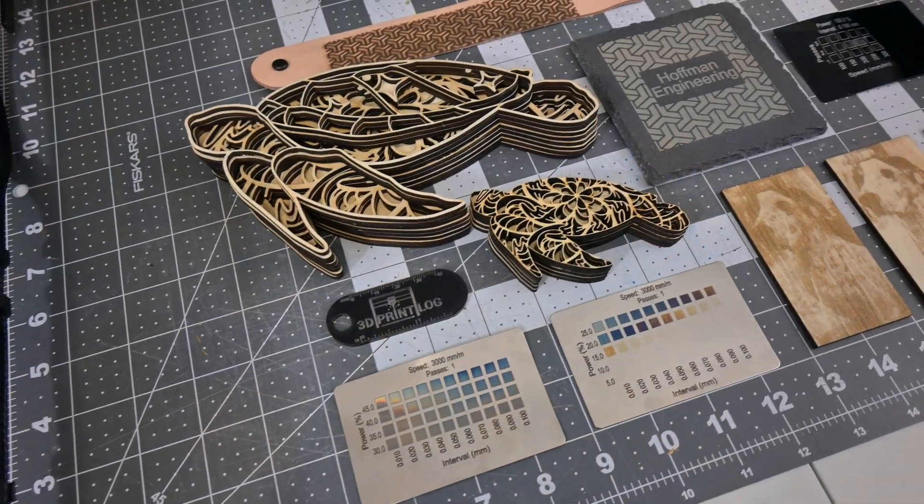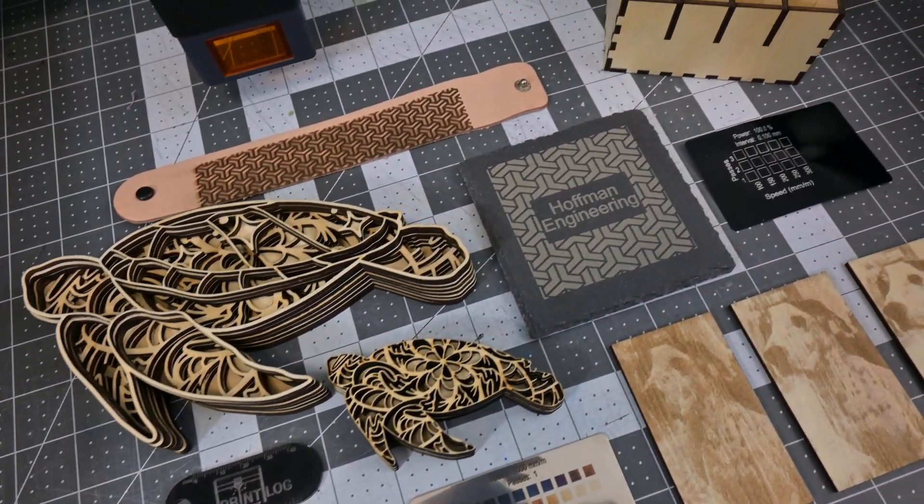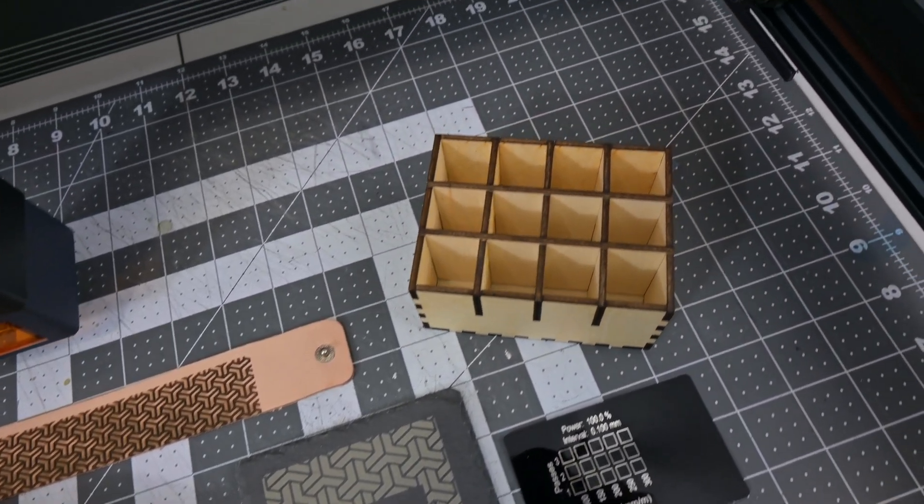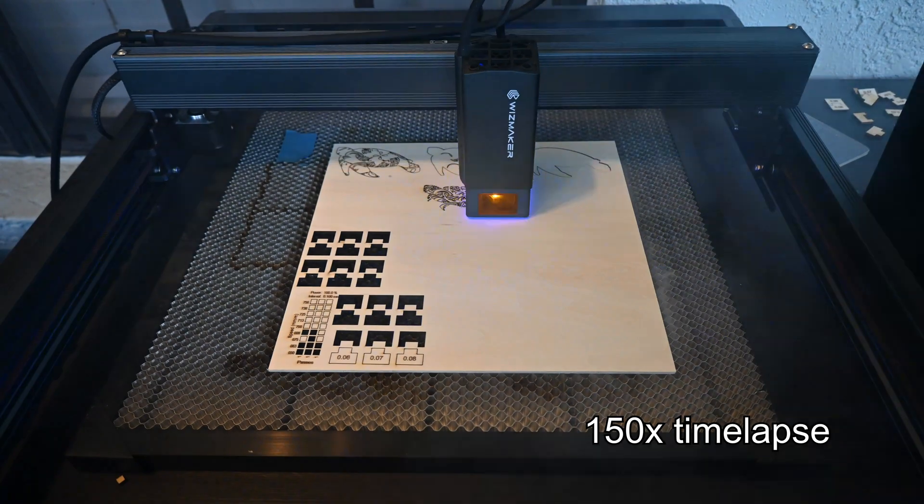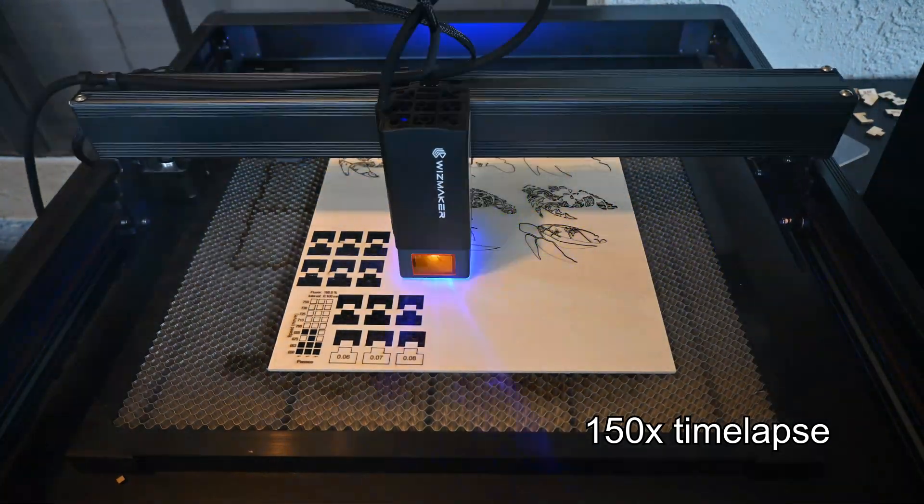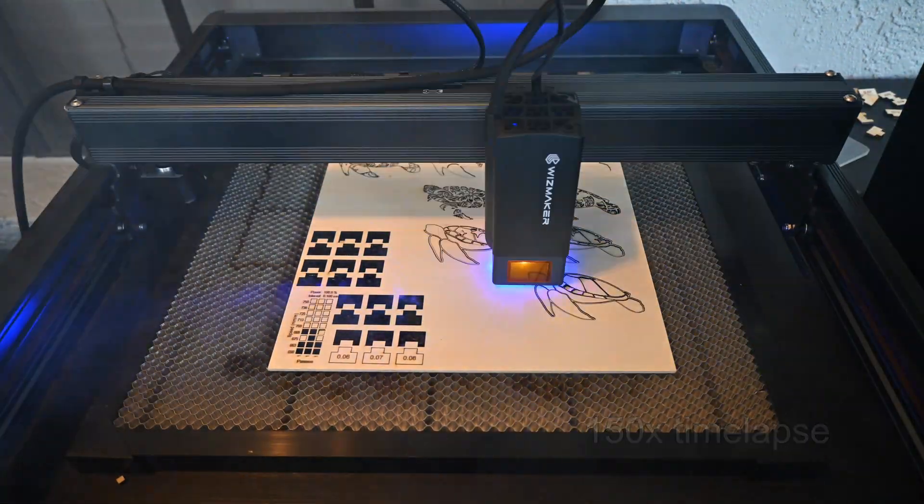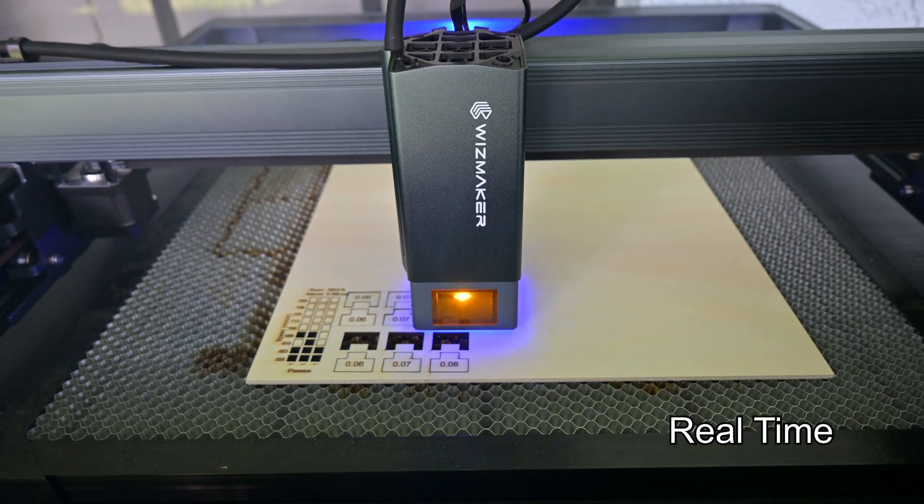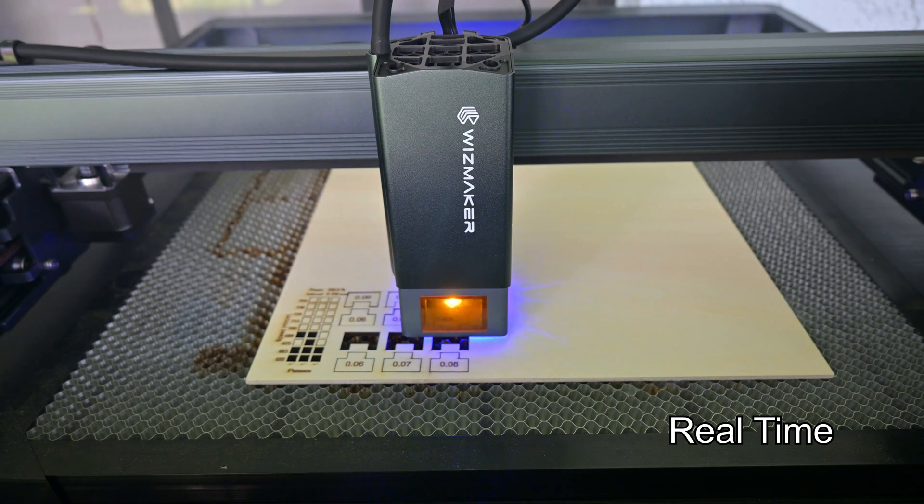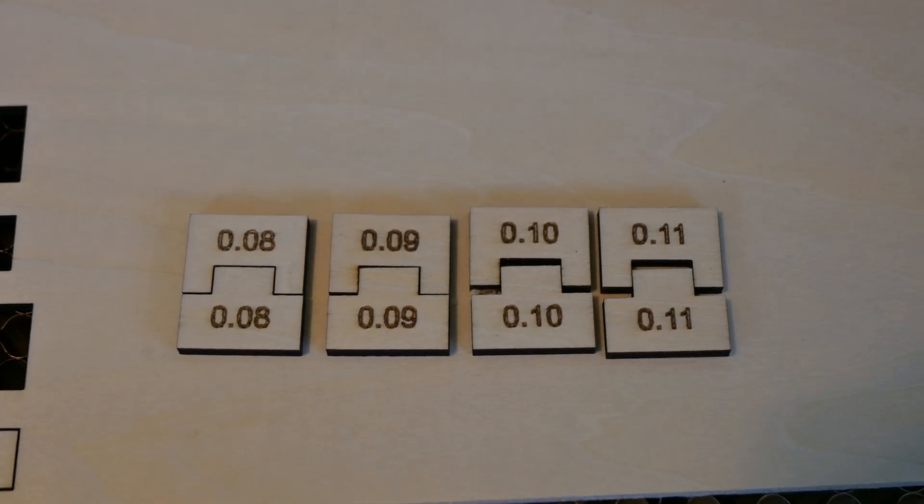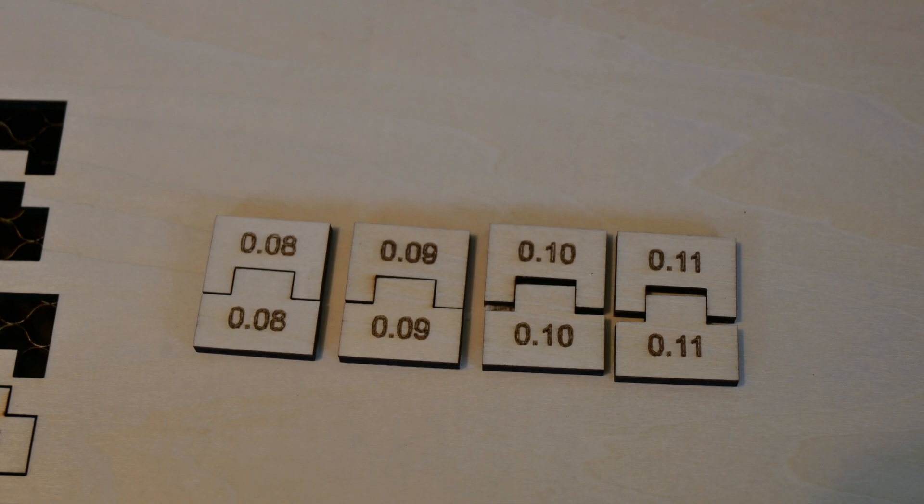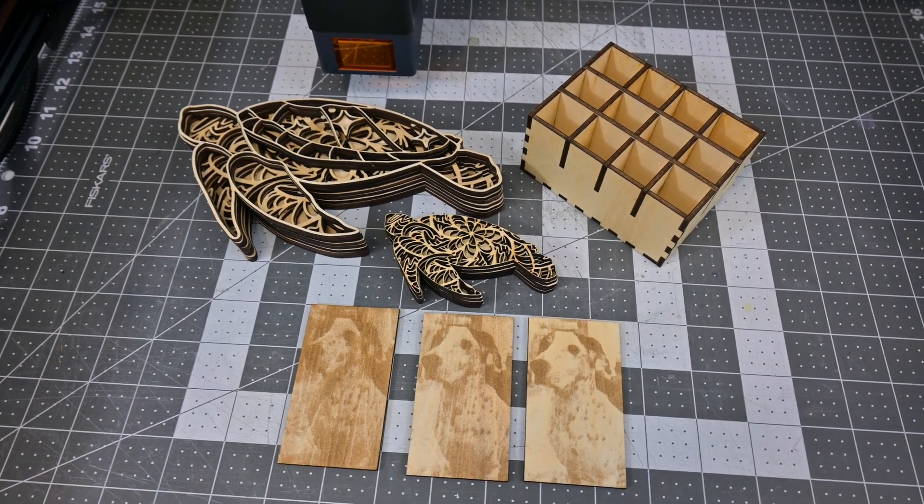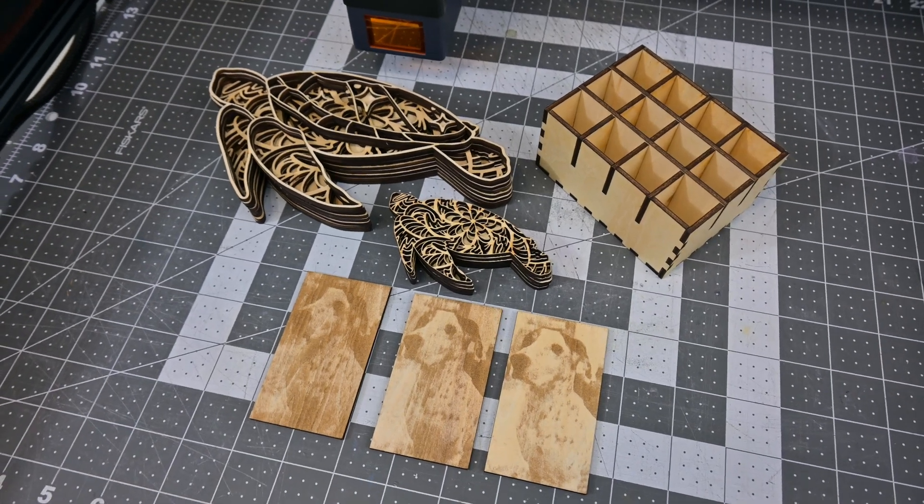The short answer is, very fast. The 36 watt laser makes short work of cutting through materials, especially if you use an air assist compressor. The WizMaker L1 was cutting through an eighth of an inch birch plywood consistently at 600 millimeters per minute, or 10 millimeters per second. You know we've entered a new age of diode laser engravers when we can talk about cutting in millimeters per second. My kerf test showed a kerf offset of 0.09 millimeters. That is a slightly larger kerf than other lower powered lasers that I've tested, but that is the tradeoff between combining so many lasers together.